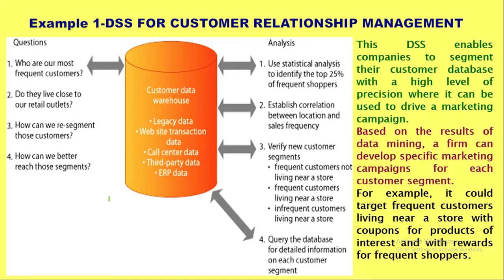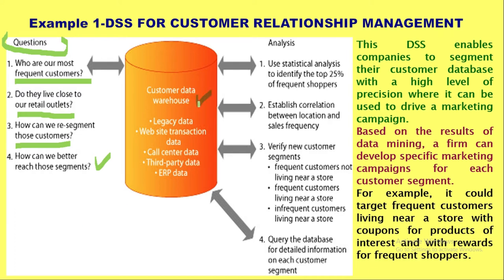Example one: DSS for customer relationship management. A manager might ask the system: who are the most frequent customers visiting the store? Do they live close to a retail outlet? How can we re-segment those customers? How can we better reach those segments? The DSS has a customer data warehouse storing complete customer data in a multi-dimensional way, including legacy data, website transaction data, and call center data.